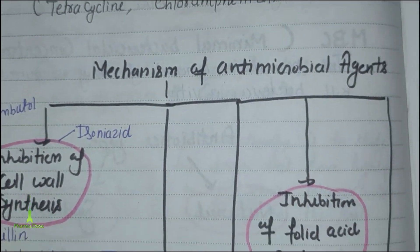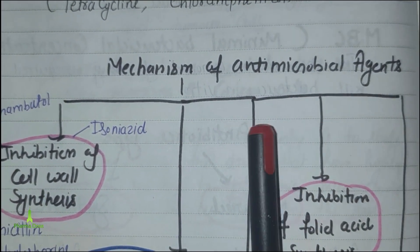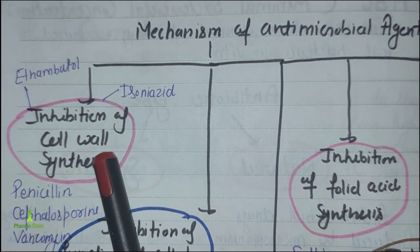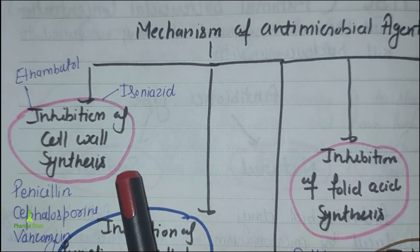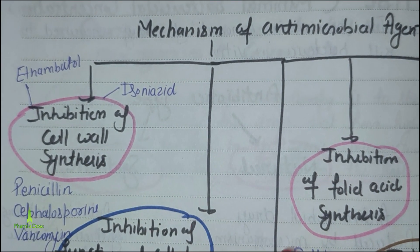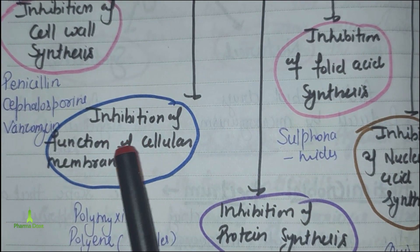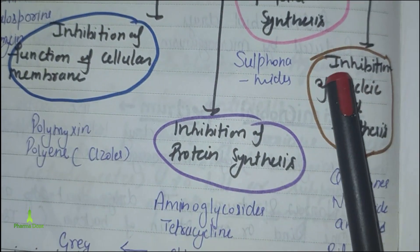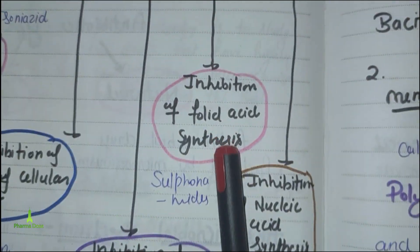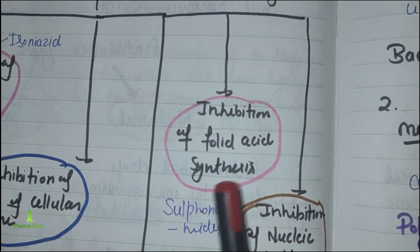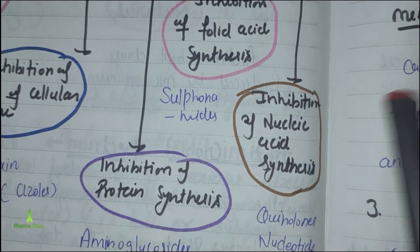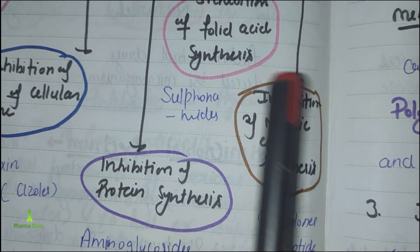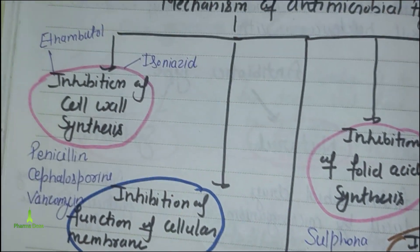Now we look at the mechanisms of antimicrobial agents. There are five types: inhibition of cell wall synthesis, inhibition of function of cellular membranes, inhibition of protein synthesis, inhibition of folic acid synthesis, and inhibition of nucleic acid synthesis.